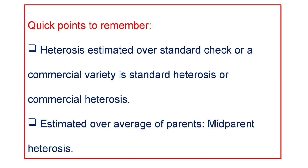Some quick points to remember: heterosis estimated over a standard check or a commercial variety is called standard heterosis or commercial heterosis. When heterosis is estimated over the average of the parents, it is called mid-parent heterosis.